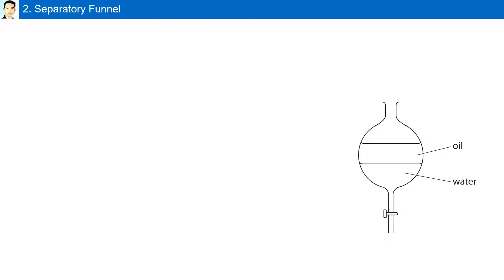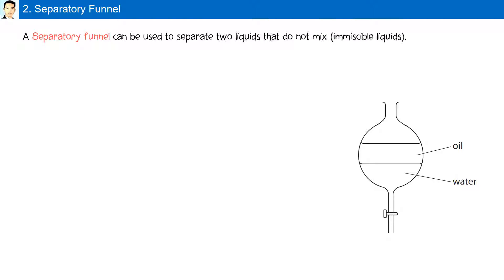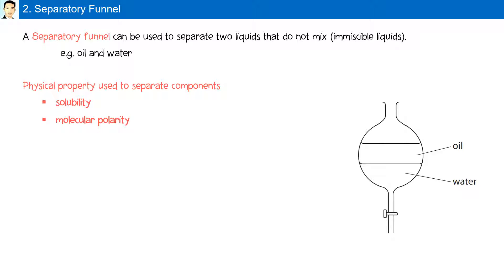A separatory funnel can be used to separate two liquids that do not mix — immiscible liquids — for example, oil and water. The physical properties used to separate these components are solubility and molecular polarity.